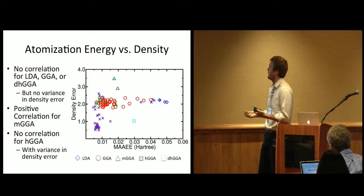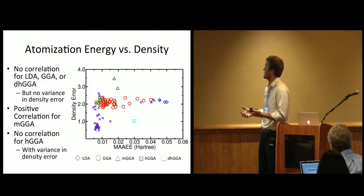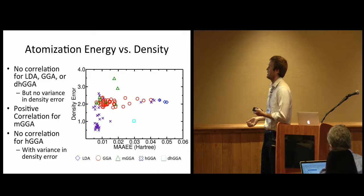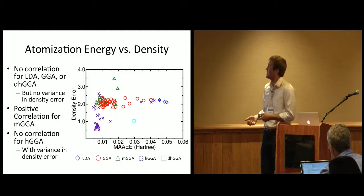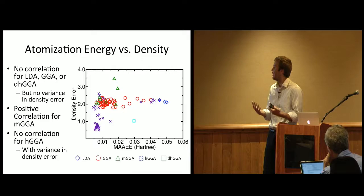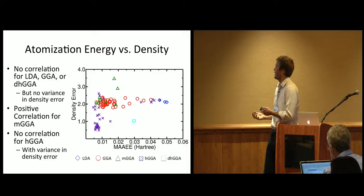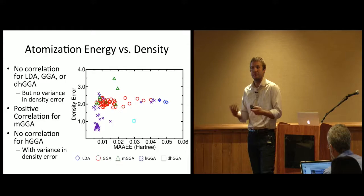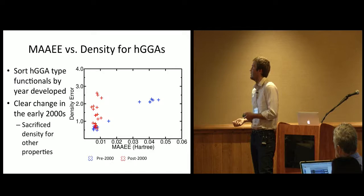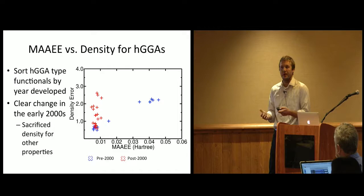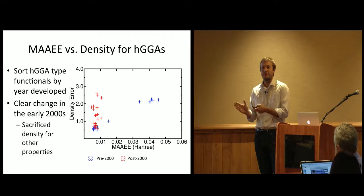So what we're really interested in, though, is seeing the correlation between the atomization energy error and the density. We graph those on the same graph. For LDA, GGA, and double hybrid GGA-type functionals, we don't see any correlation between atomization energy error and density error. That's just because there's no variance in the density error. All of them have a very similar density error. For meta-GGAs, we see positive correlation, which is what we want and what we should be getting if we're approximating the exact functional. When the atomization energy error goes down, the density error goes down likewise. But what's interesting is for hybrid functionals, which is a lot of what the modern functionals are, we don't see any correlation between atomization energy error and density error, but we also see variance in the density error.